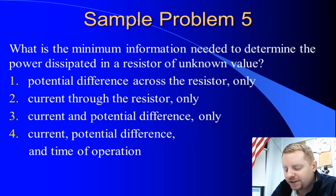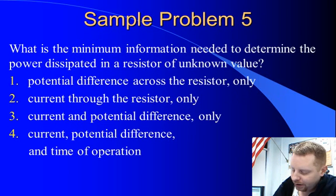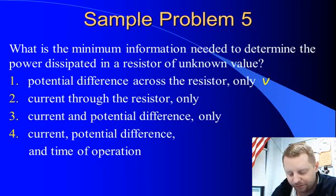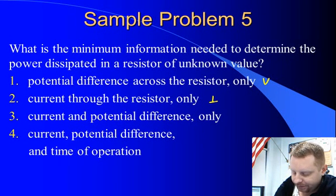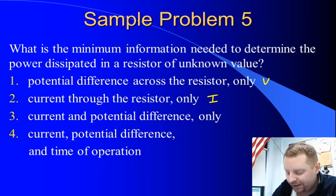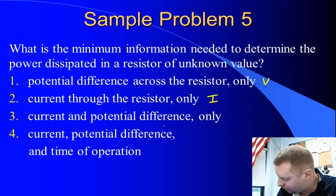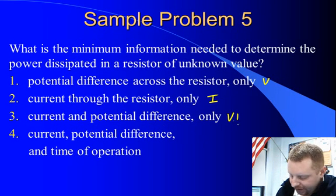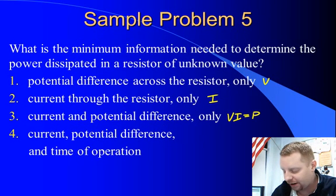What is the minimum information needed to determine the power dissipated in a resistor of unknown value? And we've got a lot of choices here. Potential difference across the resistor. So if I know just V, I don't think that's going to do it. Current through the resistor, I. Well, with just current, I can't figure out the power dissipated. Current and potential difference only, VI. Well, that should work because if you recall, one of our formulas for power is power equals potential difference times current.